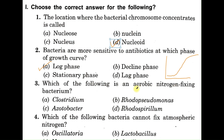Question number three: which of the following is an aerobic nitrogen-fixing bacterium? Option A: Clostridium, B: Rhodopseudomonas, C: Azotobacter, D: Rhodospirillum. Clostridium fixes nitrogen but is anaerobic. Rhodopseudomonas is an anoxygenic photosynthetic bacterium. Azotobacter is a free-living aerobic nitrogen-fixing bacterium. Rhodospirillum is a purple non-sulfur bacterium. The correct answer is C, Azotobacter.